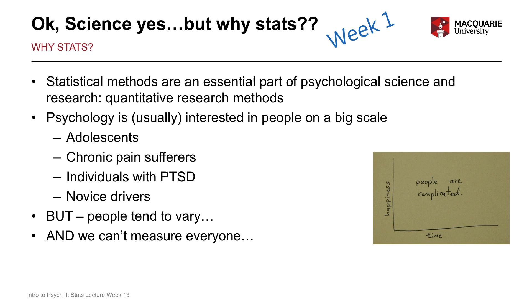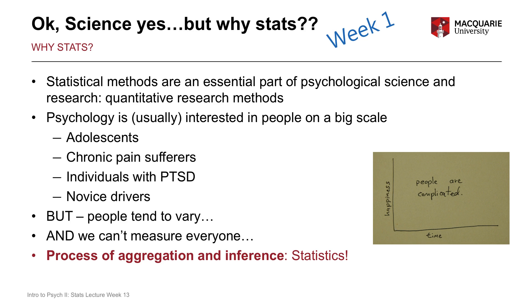We can't measure everybody, so stats gives us the process of aggregation — summarizing or averaging information across people. It also gives us the process of inference, which is using information from a sample, a smaller group of people, to make a generalization back to a population. Those are the two most important elements of statistical methods, and why we need to use them in a field like psychology.